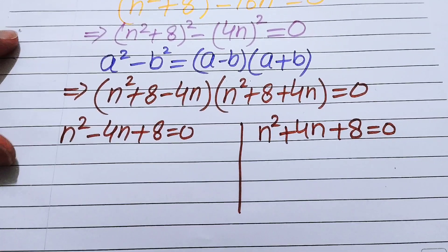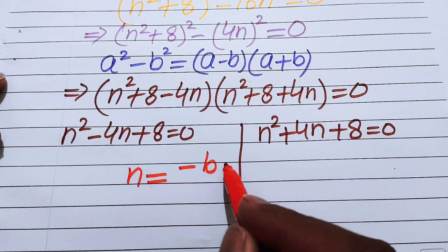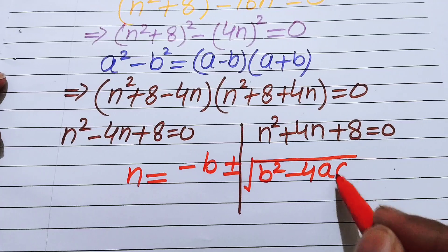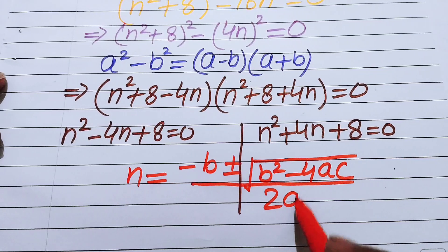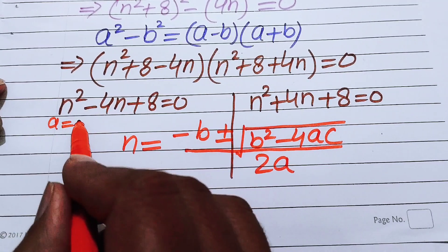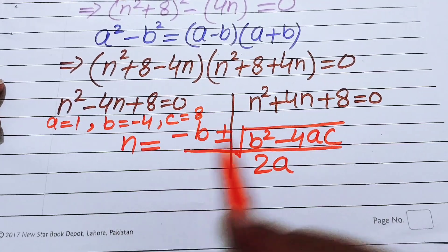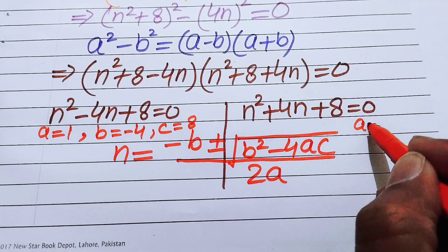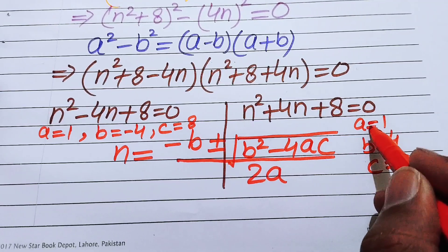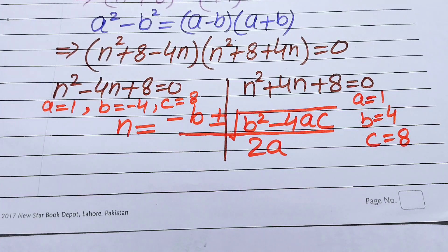The quadratic formula is n = (−b ± √(b² − 4ac)) / (2a). For Case 1, the coefficients are a = 1, b = −4, c = 8. For Case 2, the coefficients are a = 1, b = 4, c = 8.